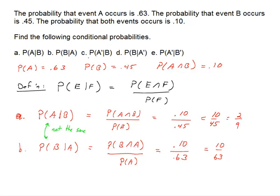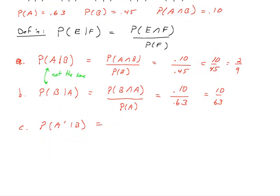For part C, I'm going to show you that we can solve this in two ways. Going straight to the definition: the probability of A complement given B requires A complement intersected with event B in the numerator, divided by the probability of B. The denominator is no problem — we already know P(B) is 0.45 — but we don't have the probability of A complement intersect B.